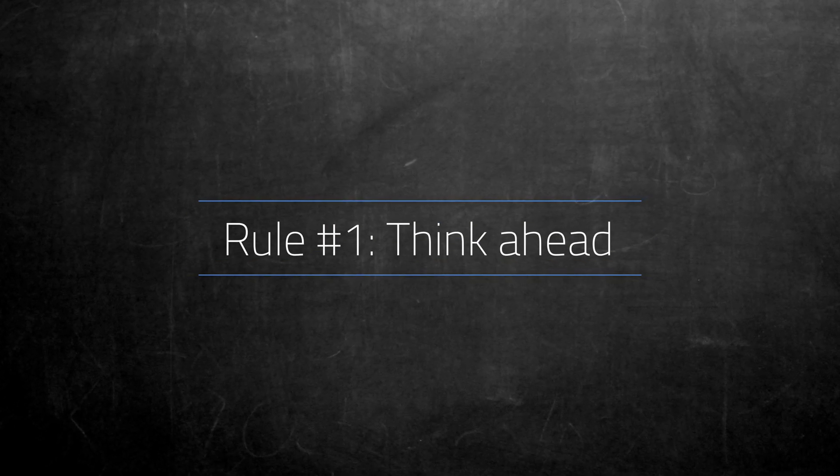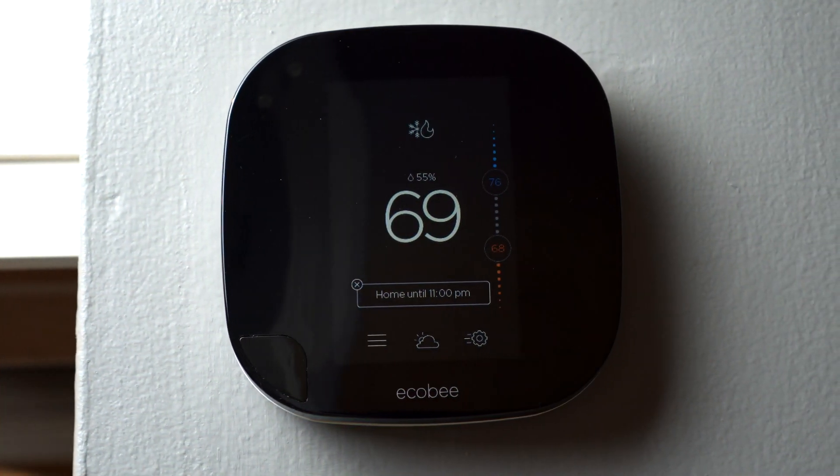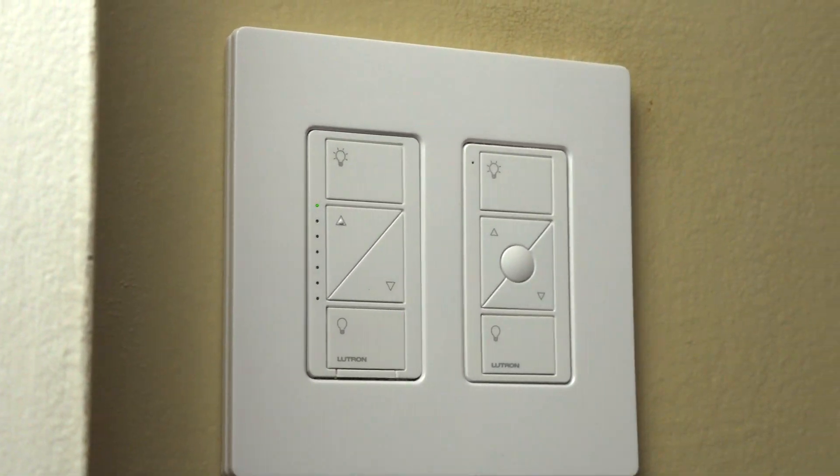That leads me to some simple rules I recommend following. Rule number one: think about what you want to do. Sometimes I've bought a product because of some shiny, fancy feature without thinking through if it's something I'll actually use or need. Think about the things in your home you want to automate to save energy or make your life easier — smart thermostats to control heating and cooling costs, smart lights that turn themselves off when the house is empty. Go in with a rough plan.